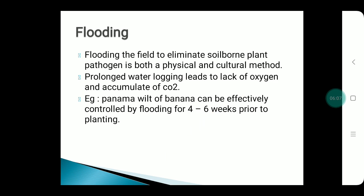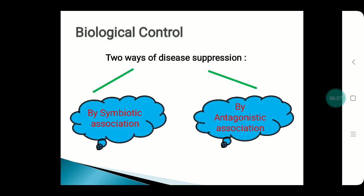Flooding helps to eliminate soil-borne plant pathogens by both physical and cultural means. Prolonged waterlogging leads to lack of oxygen and accumulation of CO2, so pathogens cannot survive in the soil. For example, Panama wilt of banana can be effectively controlled by flooding for 4 to 6 weeks prior to planting.